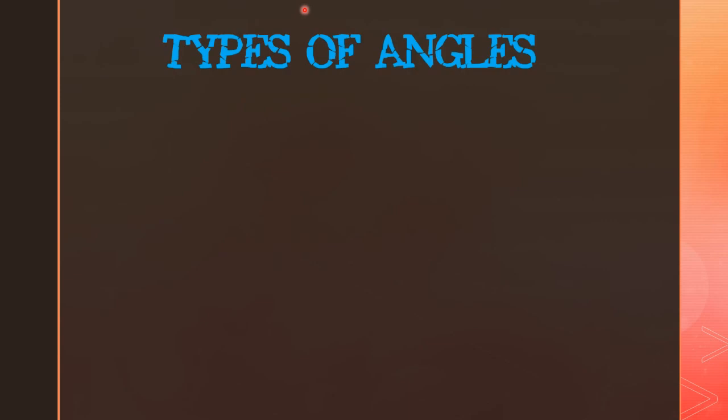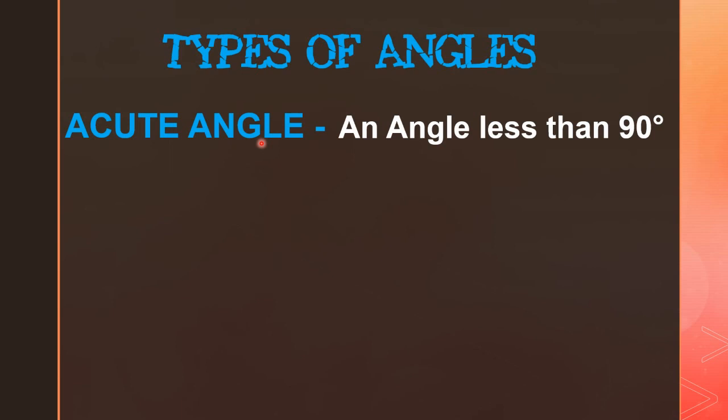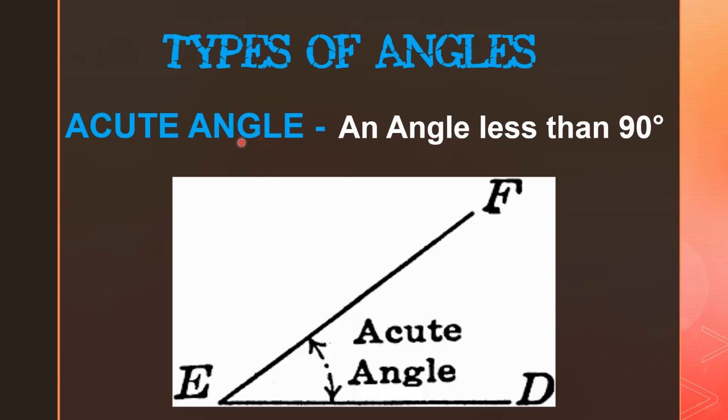Now we will see types of angles. The first type is the acute angle. An angle less than 90 degrees is called an acute angle. Here you can see the picture of an acute angle.